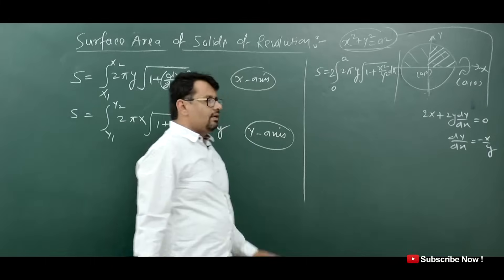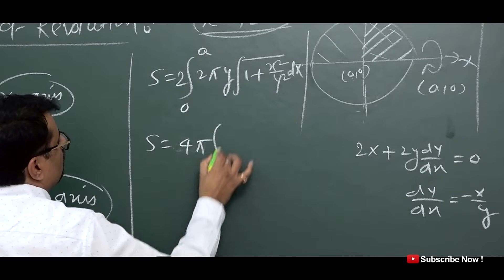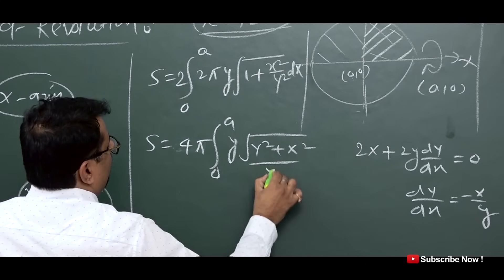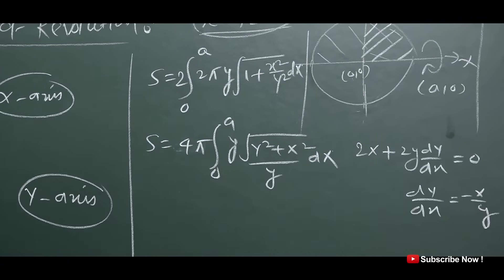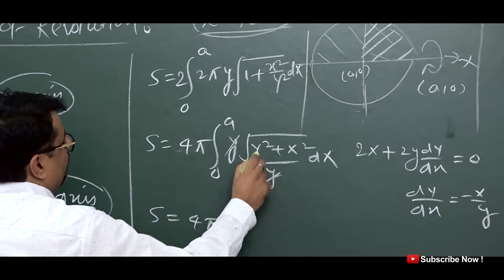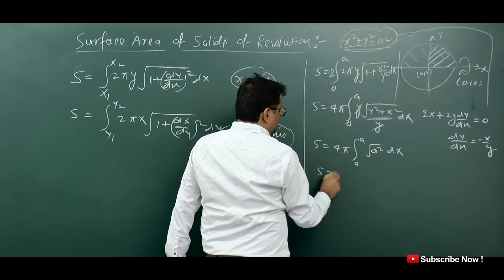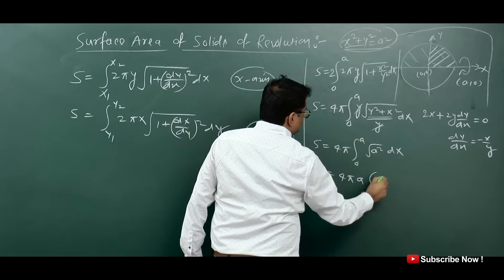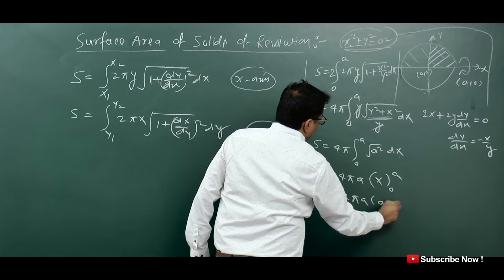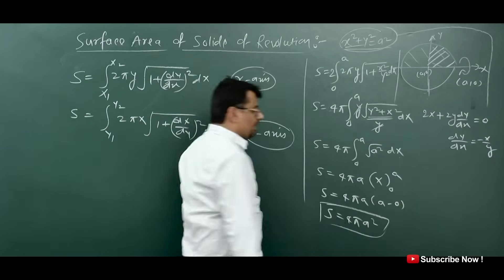Substituting into the formula: 1 + (dy/dx)² = 1 + x²/y². Taking LCM and simplifying, the y cancels and we get S = 4π ∫₀ᵃ √(x² + y²) dx. Since x² + y² = a², this becomes 4π ∫₀ᵃ a dx = 4πa × [x]₀ᵃ = 4πa × a. So the answer is S = 4πa².